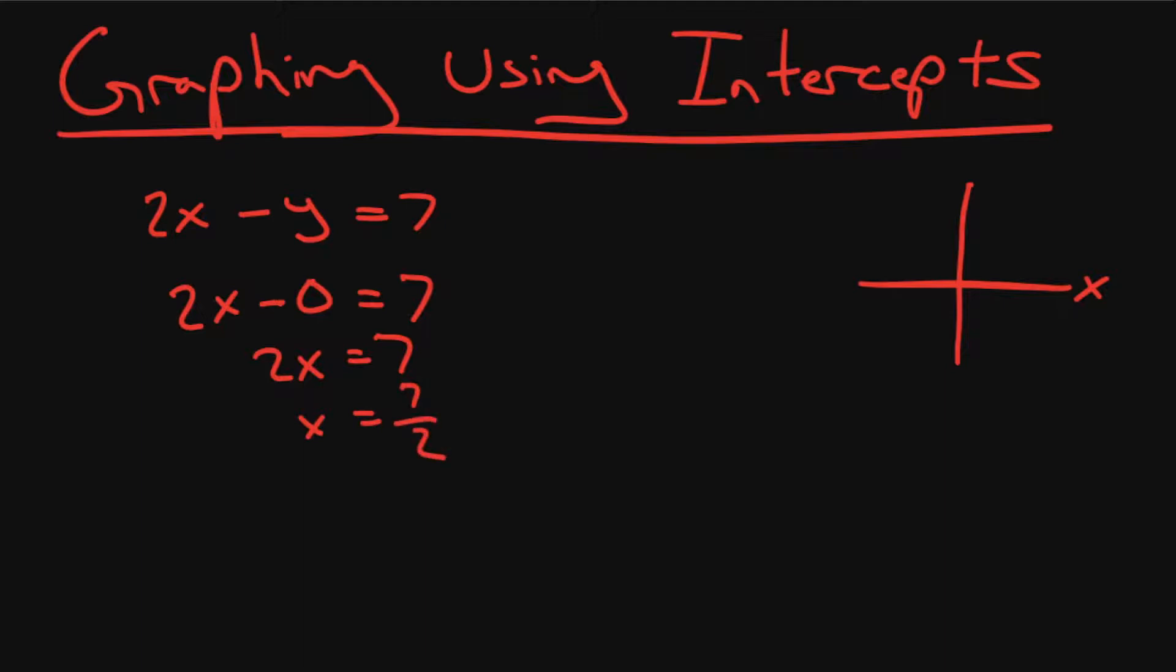And if we do the same thing for the y-intercept, we want to find out where it crosses the y-axis. We're looking at x equals 0. Now we're left with 2 times 0, which is 0, so we have negative y equals 7. Divide both sides by negative 1 and we get y equals negative 7. So we know that negative 7 is somewhere here and 7 over 2, which is 3.5, is somewhere there. That line is basically our line.